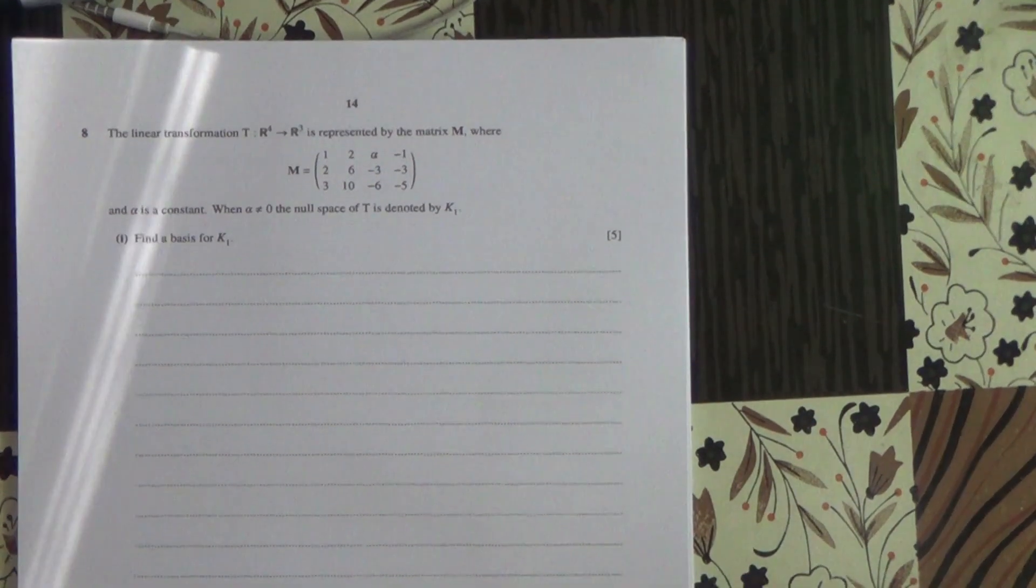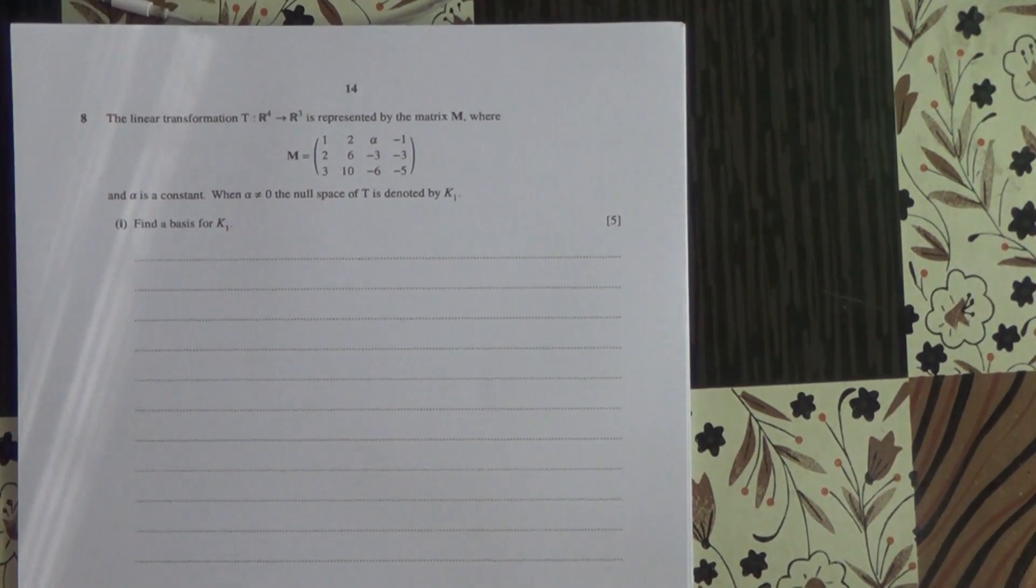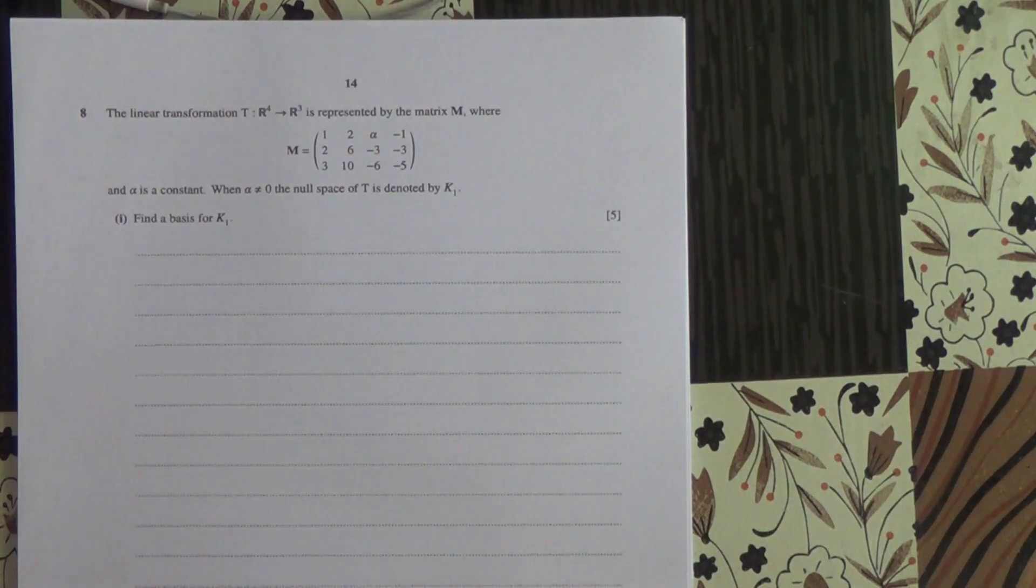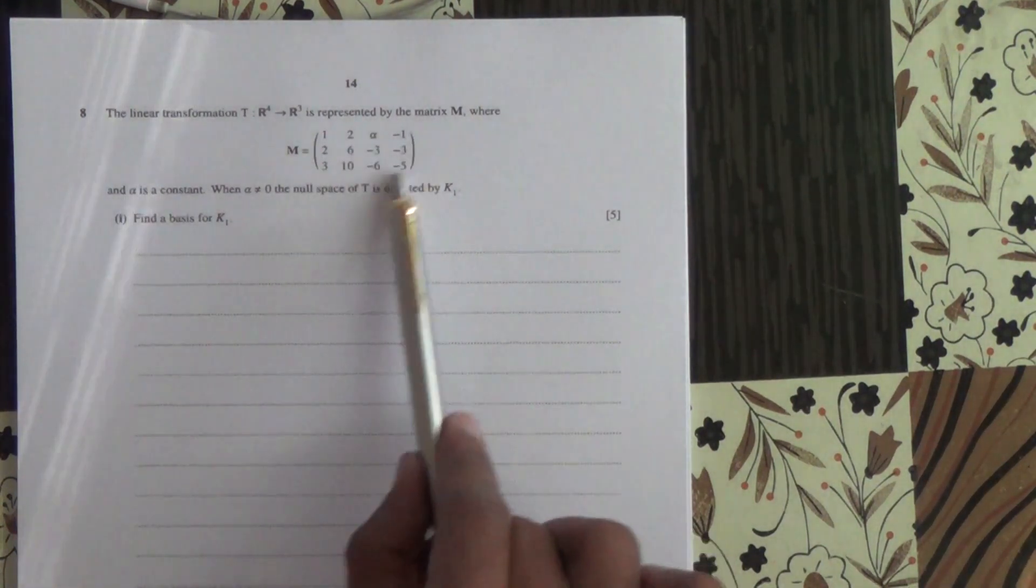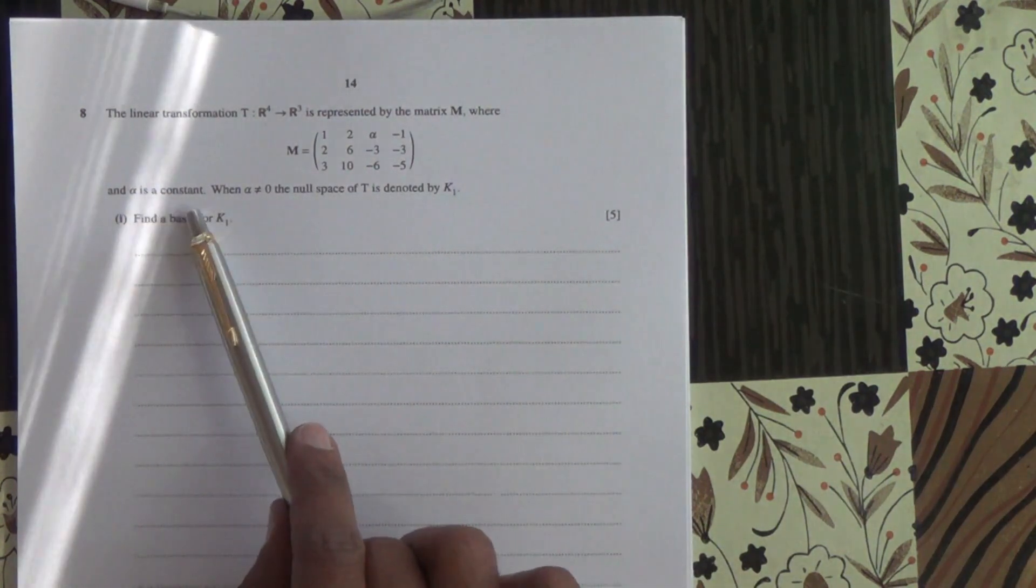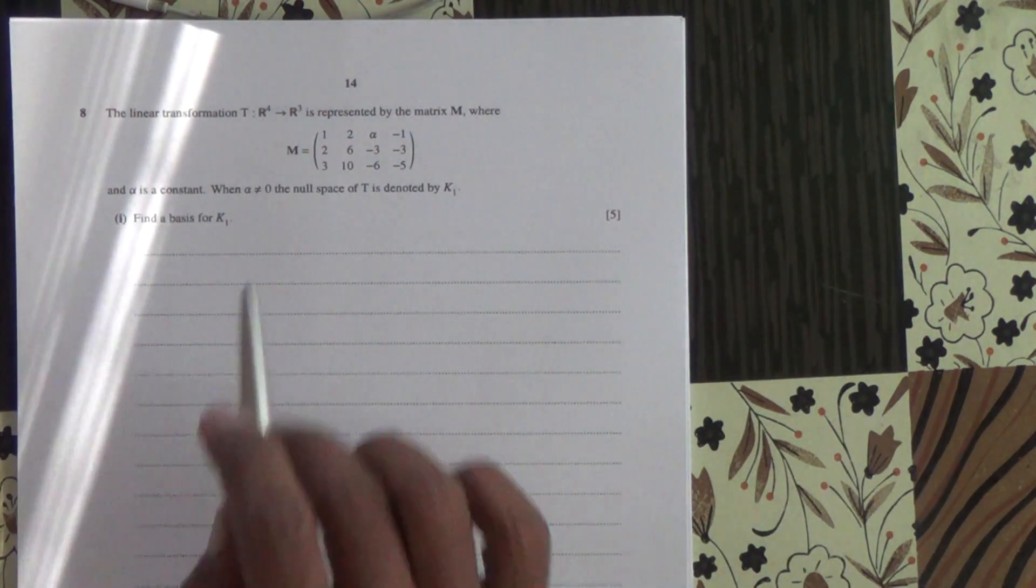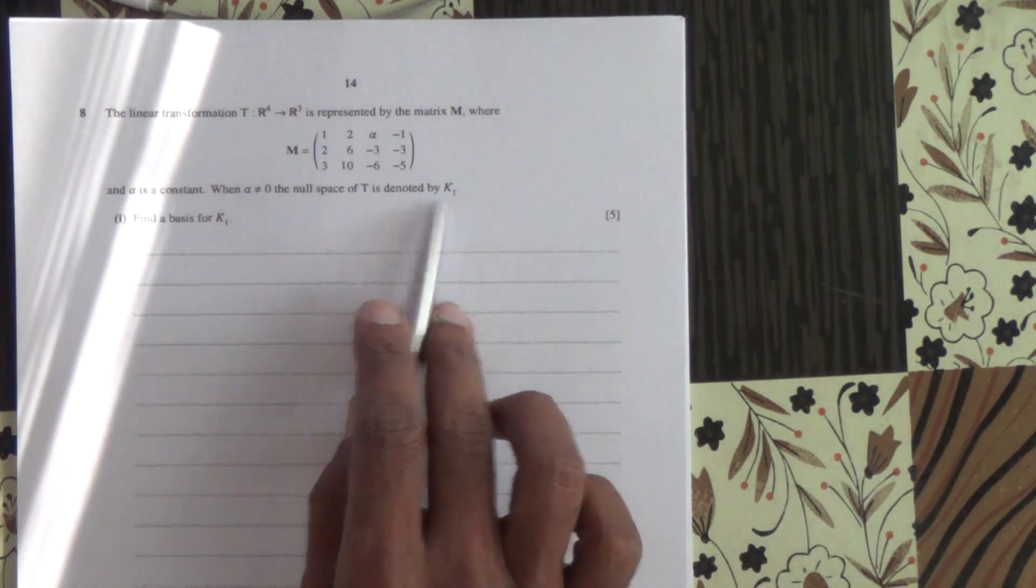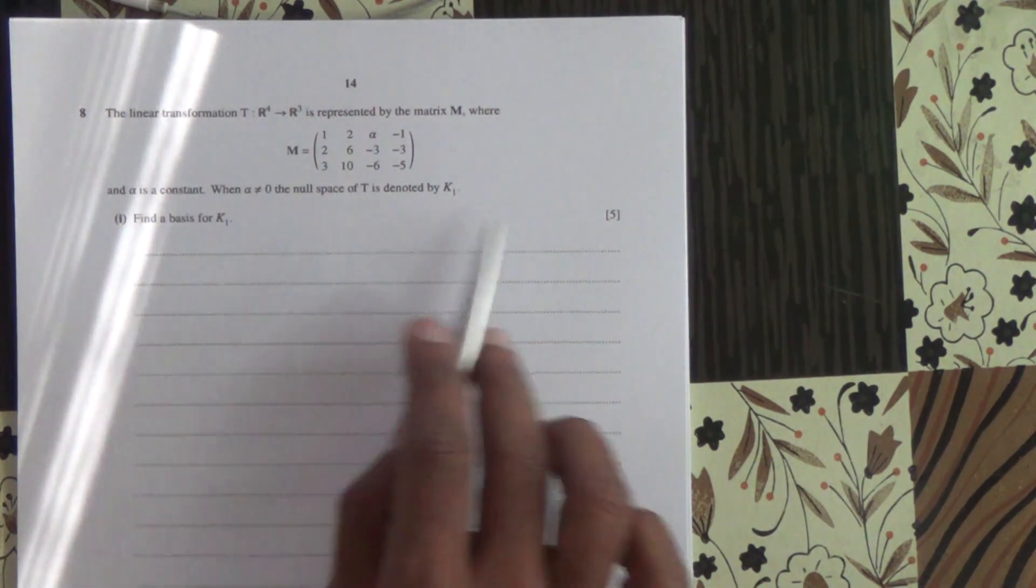Hi, question number 8. The linear transformation T is such that R4 is mapped to R3, represented by the matrix M, where M is all of those, and alpha is a constant. When alpha is not equal to 0, the null space of T is denoted by K1. Find a basis for K1, five marks.